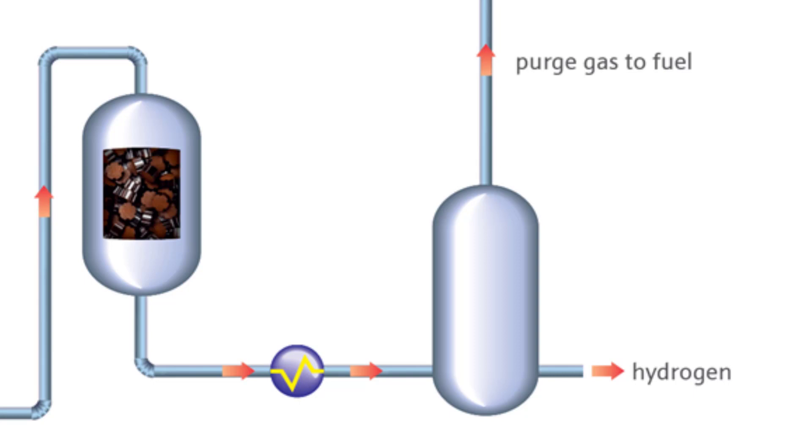At this step, the residual carbon monoxide, carbon dioxide, and any remaining methane are removed from the process stream, leaving a highly pure stream of hydrogen to be used in further processes or sold as product.